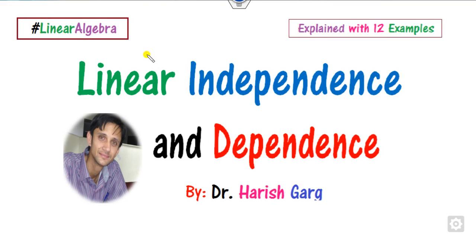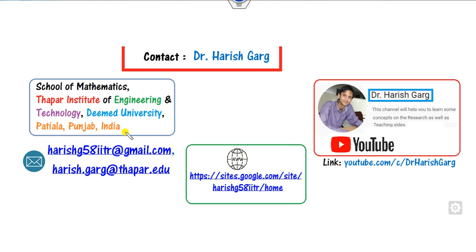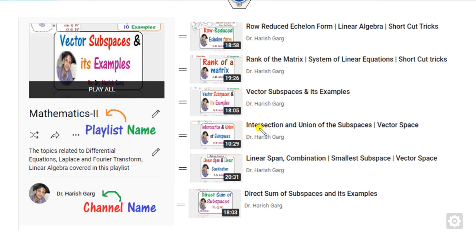Hello students, welcome to the next lecture on linear algebra. Today we will discuss linear independence and linear dependence. We will explain this lecture with the help of 12 examples so that you can easily understand it. I am Dr. Gork, working in the School of Mathematics, Thapar Institute, India. This lecture is a continuation of the previous one, related to row reduced echelon form, rank, vector space, and so on. You can find these lectures on the playlist Mathematics 2, channel name Dr. Harishkar.